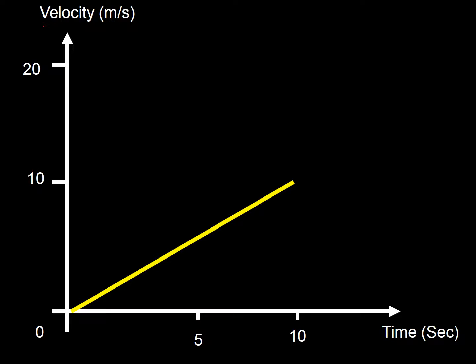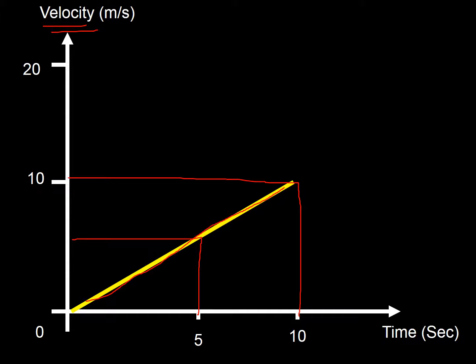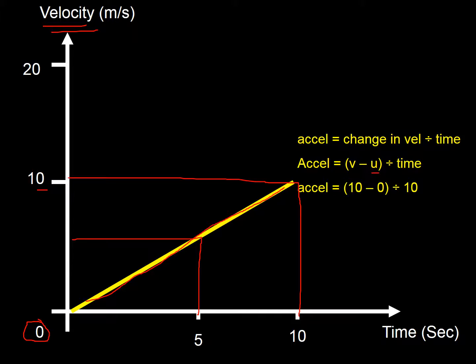Now we're looking at a velocity-time graph sloping upwards — something is changing. After 5 seconds it's doing 5 meters per second; after 10 seconds it's doing 10 meters per second. That means it's accelerating. We can calculate the acceleration using: acceleration equals change in velocity divided by time, or (v minus u) divided by t. So that's (10 minus 0) divided by 10, which gives 1 meter per second squared.